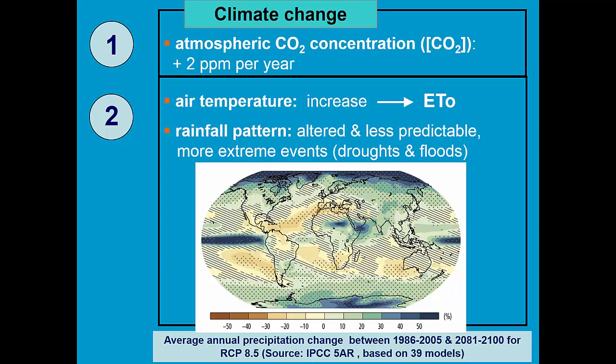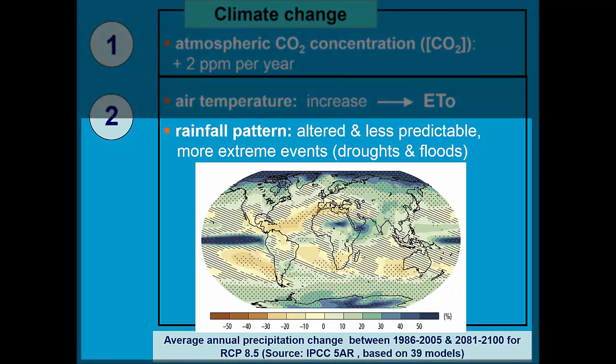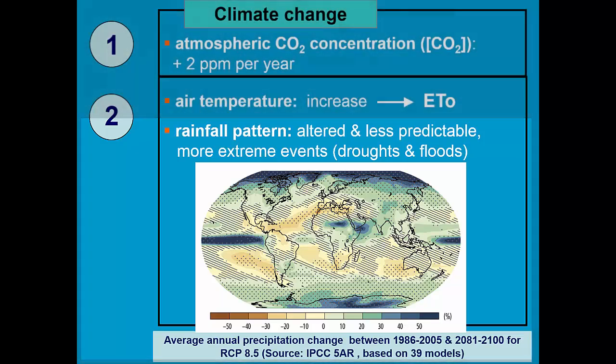Rainfall might become less predictable and we can get more extreme events — more droughts, more floods. This is an IPCC map plotting the average annual precipitation change at different places in the world.